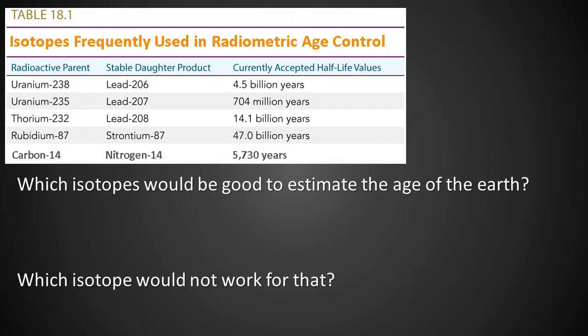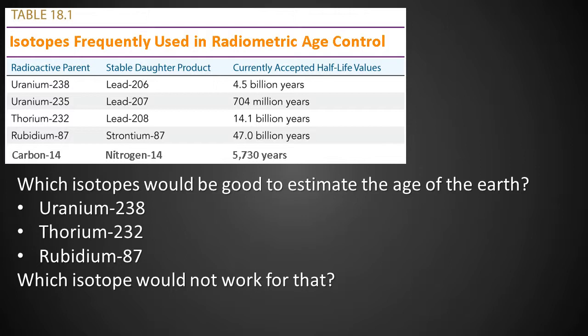This table lists some radioactive isotopes used for determining the age of geologic units and processes. Which isotopes would be good to estimate the age of the Earth? Uranium, thorium, and rubidium all have long half-lives. Carbon-14 would not work for that; its half-life is so short that all of the carbon-14 that may have existed when the Earth was formed would have decayed by now.